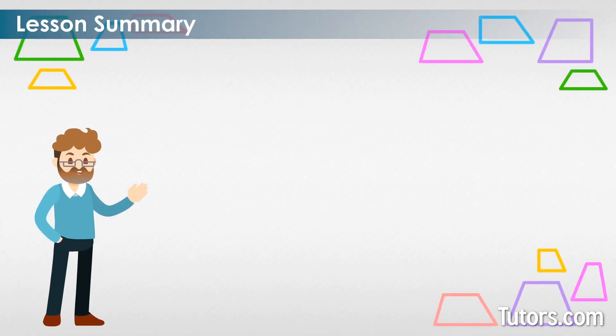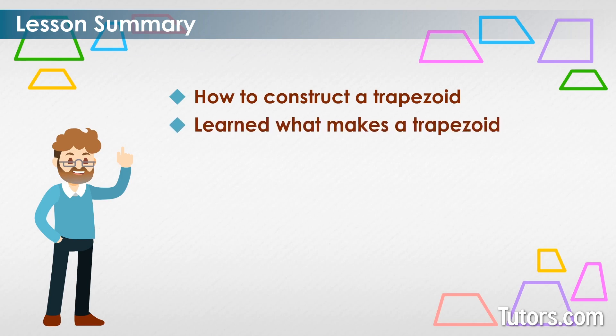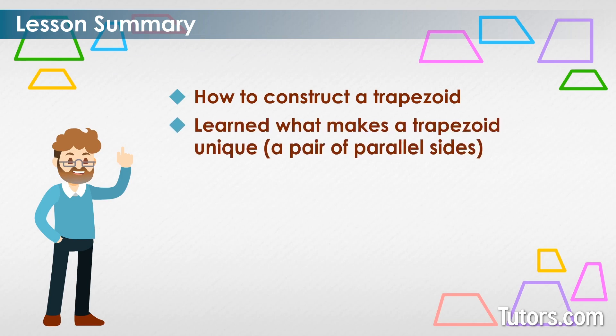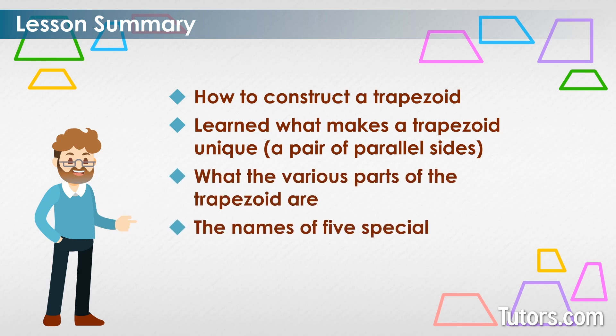In this lesson, using just four lines and four interior angles, we have constructed a trapezoid, learned what makes a trapezoid unique — a pair of parallel sides — what the various parts of the trapezoid are, and the names of five special trapezoids.